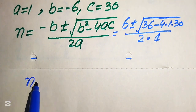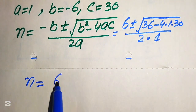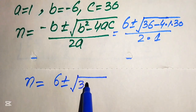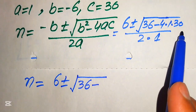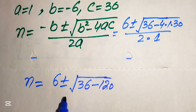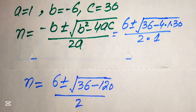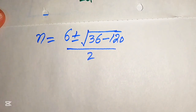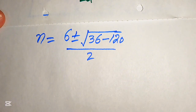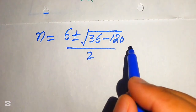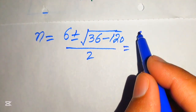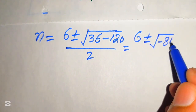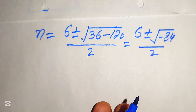Simplifying, we get n equals 6 plus or minus the square root of 36 minus 120, divided by 2. Then 36 minus 120 equals minus 84, so n equals 6 plus or minus the square root of minus 84, divided by 2.